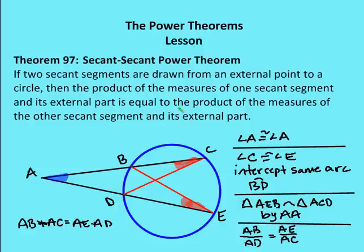To prove this, I draw two lines — one from B to E and one from D to C — giving two similar triangles ADC and ABE. First, angle A is congruent to itself by the reflexive property. Then angle C and angle E are congruent because they intercept the same arc BD. So triangle AEB is similar to triangle ACD by the angle-angle similarity postulate. Setting up the relationship: AB is to AD as AE is to AC. Using the means-extremes product theorem: AB times AC equals AD times AE.